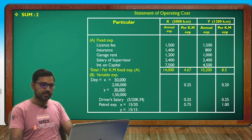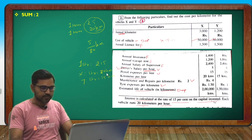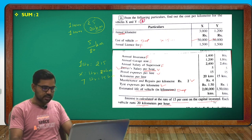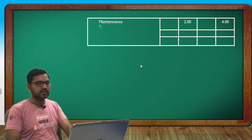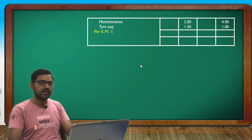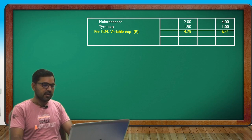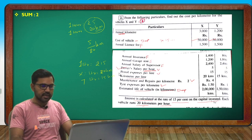Continuing variable cost calculations: X comes to 15 rupees per km total. Tire expense: X equals 2 rupees per km and Y equals 4 rupees per km.